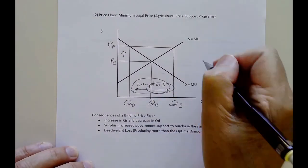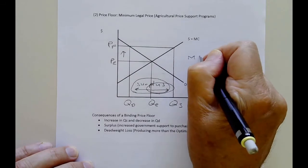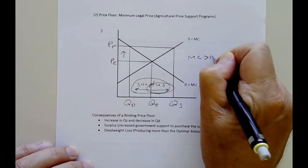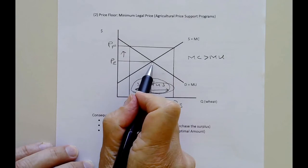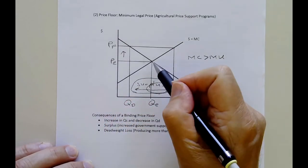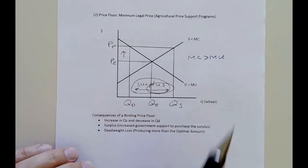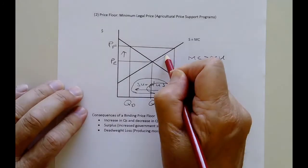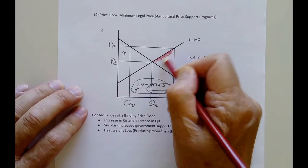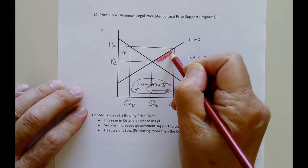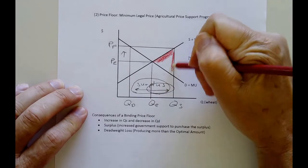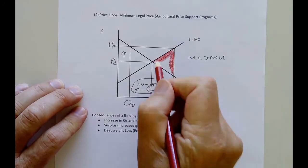So here we're producing wheat that has a higher marginal cost than it's worth. The benefit is falling down here. The wheat's getting more costly to produce, increasingly more costly. And all this area here now becomes a deadweight loss. The higher the price floor, the greater the overproduction, and the greater the deadweight loss.